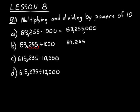And so in practice problem C, we'd say 615,235. We don't worry about the commas right now. We add four more zeros on the end. That's the same thing as multiplying by 10,000. Now we go back and put our commas in.